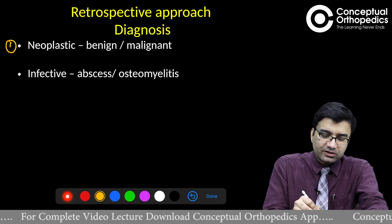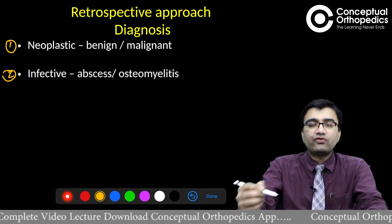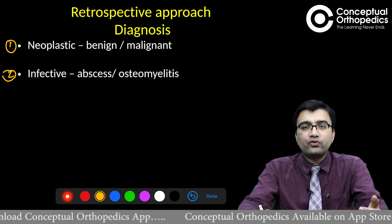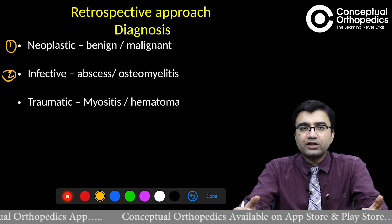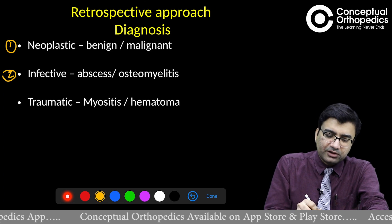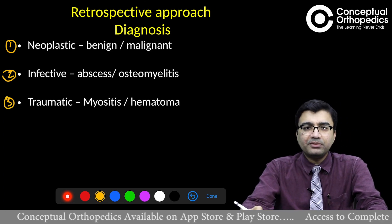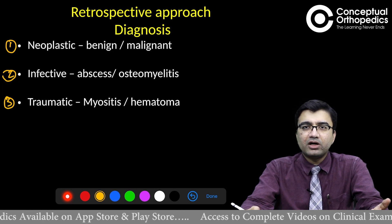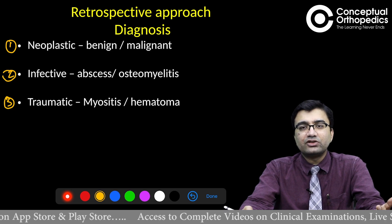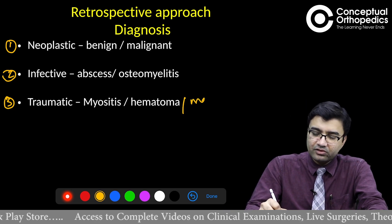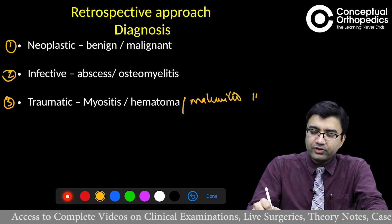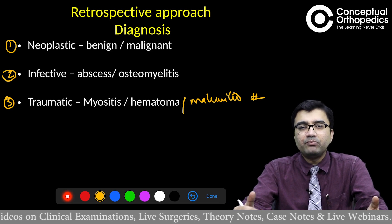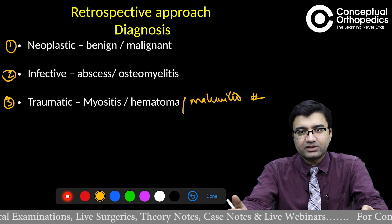The second common cause may be infective, like osteomyelitis or an abscess which presents like a soft tissue mass. The third common ones may be due to trauma — mainly a myositic mass, hematoma, or malunited fracture — which may present as a swelling and commonly mimics a neoplastic origin.